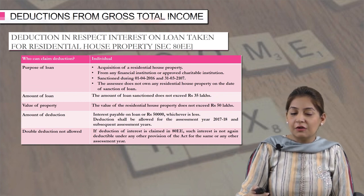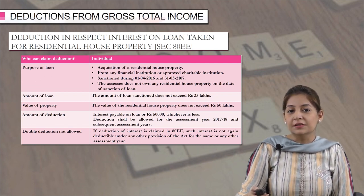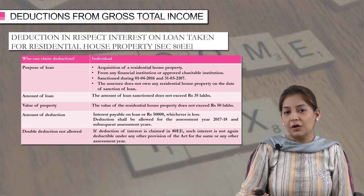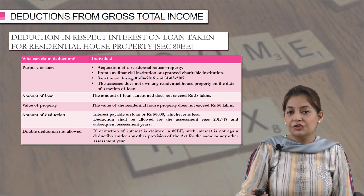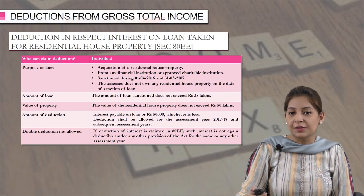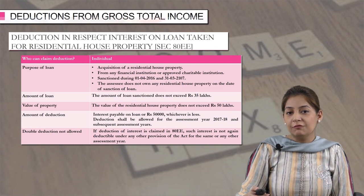The amount of deduction that can be claimed is rupees 50,000 or the amount of interest on loan, whichever is less. So for example, if the interest amount is rupees 40,000, you can claim 40,000.